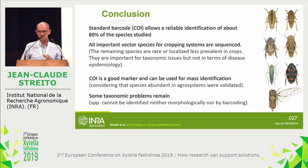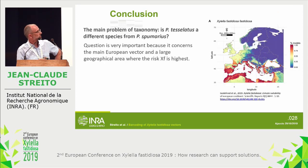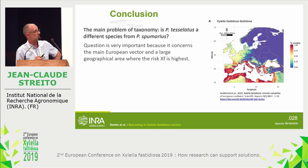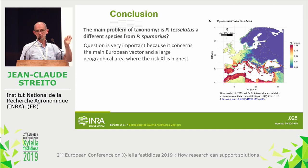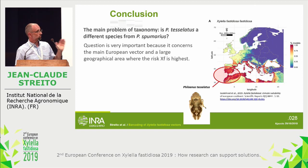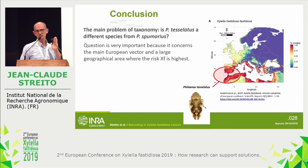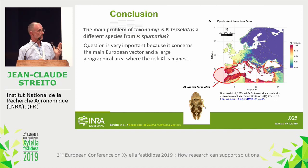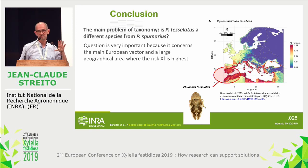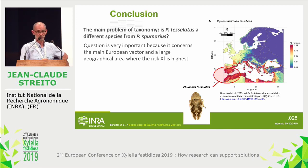Some taxonomic problems remain. The main one is the problem of Spumarius and Tesselatus — both probably vectors of Xylella. Tesselatus was thought to be localized in Portugal and Spain but is in fact widely distributed in Spain, Portugal, and all North Africa. It is likely the main species in this part of the world, which corresponds to the highest Xylella risk zone. It is really important to resolve this question for these countries.